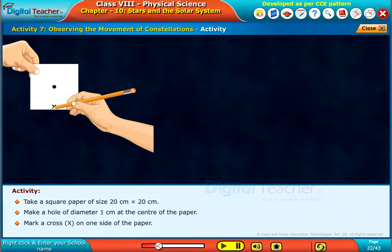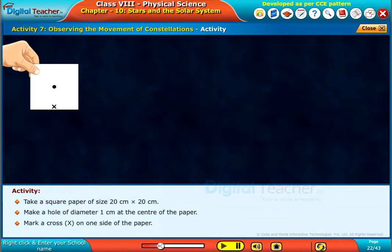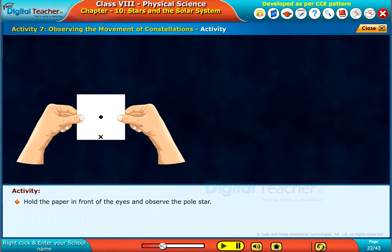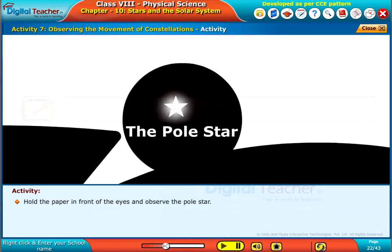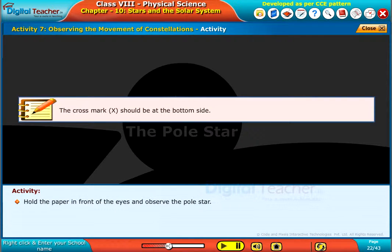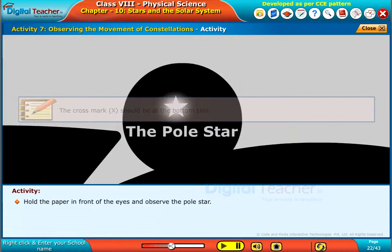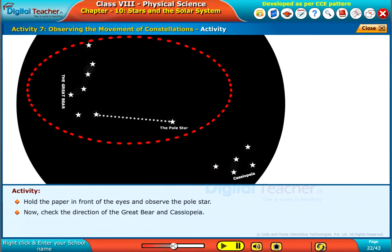Mark a cross X on one side of the paper. Hold the paper in front of the eyes and observe the pole star. Note the cross mark X should be at the bottom side.